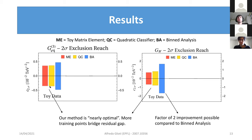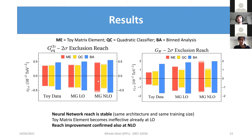This was for toy data generated from our leading-order Monte Carlo. We then repeated the same analysis on events generated with MadGraph — both at leading order and at next-to-leading order showered with Pythia. The results are quite striking: the neural network reach is stable and doesn't change very much even as you increase the complexity of the data the network is learning from. Meanwhile, tests like the matrix element approach are already ineffective at the leading-order level, mostly because of neutrino reconstruction that slightly changes the kinematics. The situation gets even worse at next-to-leading order, where both the binned analysis and the matrix element test are completely ineffective, while the neural network reach remains basically the same as in the toy case.